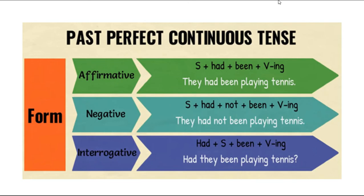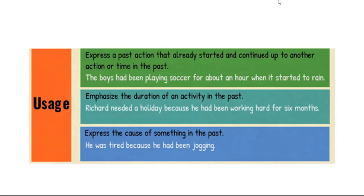Past perfect continuous — affirmative, negative, and interrogative. Usage: to express a past action that already started and continued up to another action or time in the past — 'The boys had been playing soccer for about an hour when it started to rain.' To emphasize the duration of an activity in the past — 'Richard needed a holiday because he had been working hard for six months.' To express the cause of something in the past — 'He was tired because he had been jogging.'